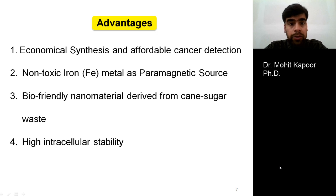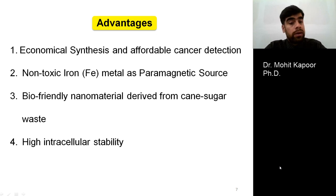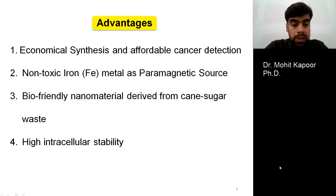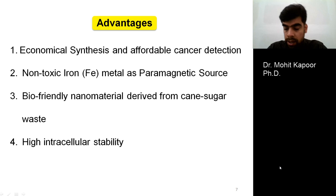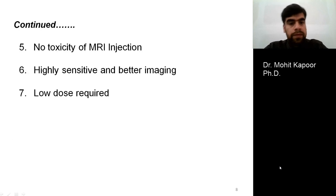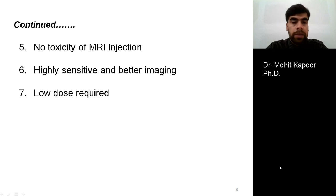The advantages will be the economical synthesis and affordable cancer detection. We are choosing non-toxic iron metals that are bio-friendly because we derive them from cane sugar waste. They will have high intracellular stability so that the iron metal will not fall off during the journey to the cancer site. If the iron metal does not fall off, there is no toxicity, and we will have higher sensitivity and better imaging.